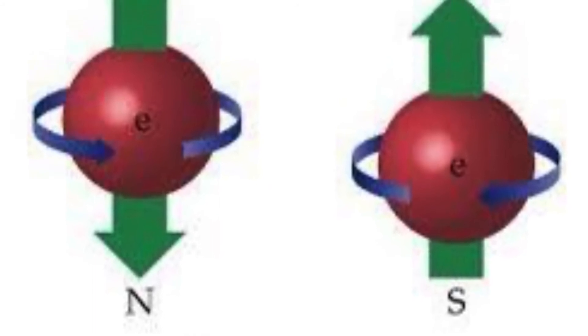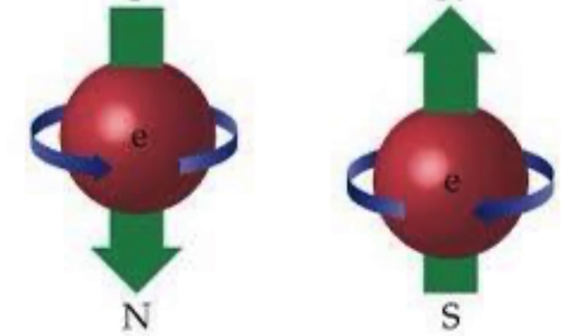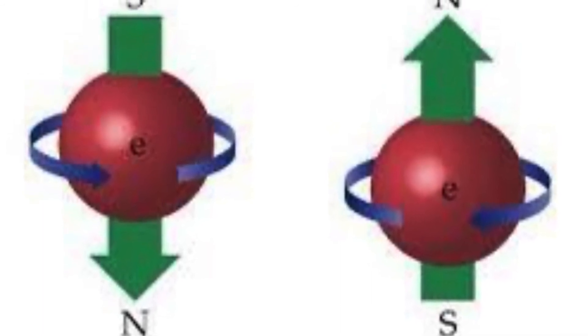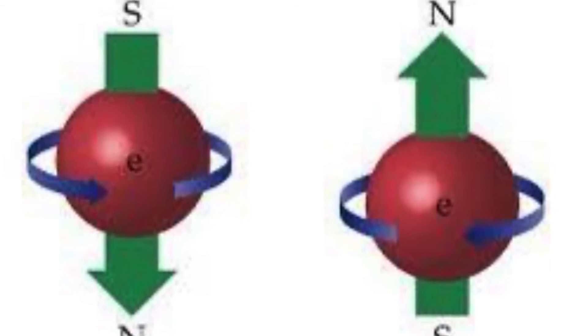Due to electron spin, a maximum of two electrons can occupy any given orbital, and the two electrons occupying the same orbital must have opposite spin. This is called the Pauli Exclusion Principle.